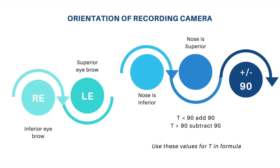In summary, vertical flipping of the eye when shifting from the right eye to the left eye will not impact the formula. But if the nose is being recorded superiorly or inferiorly, the initial T used in the formula has to be altered — flipped by 90°. If T is less than 90° we add 90, and if it is more than 90° we subtract 90, and these modified T values are used as the initial T in the formula.